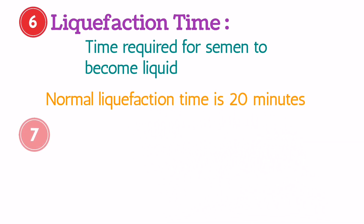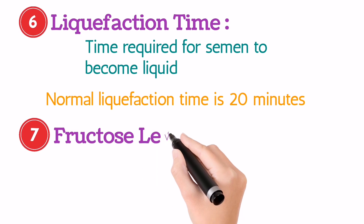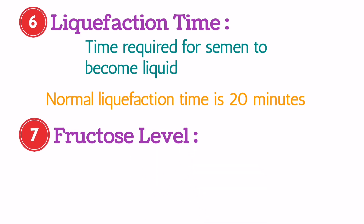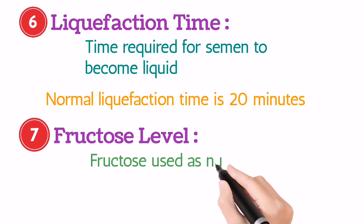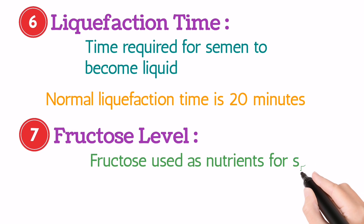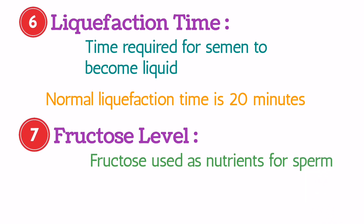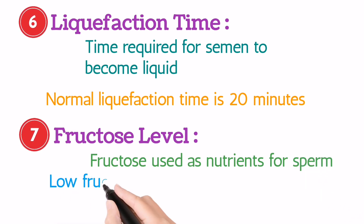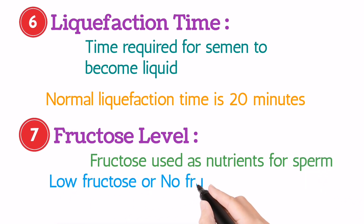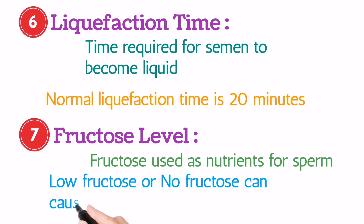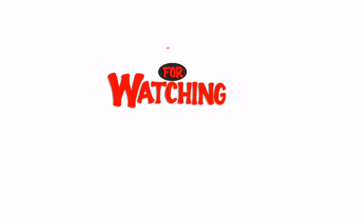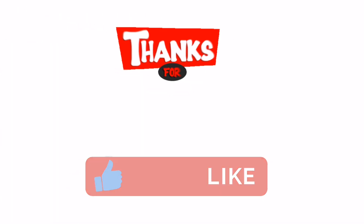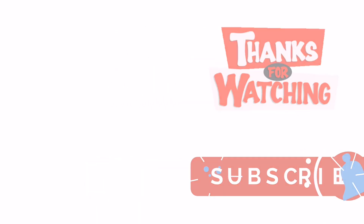Seventh, fructose level. Fructose is used as a nutrient for the sperm to survive. If there is no fructose, or although fructose, it means there will be less alive sperm, so it could result in infertility. Thanks for watching. Do subscribe to the channel and like and share the video.